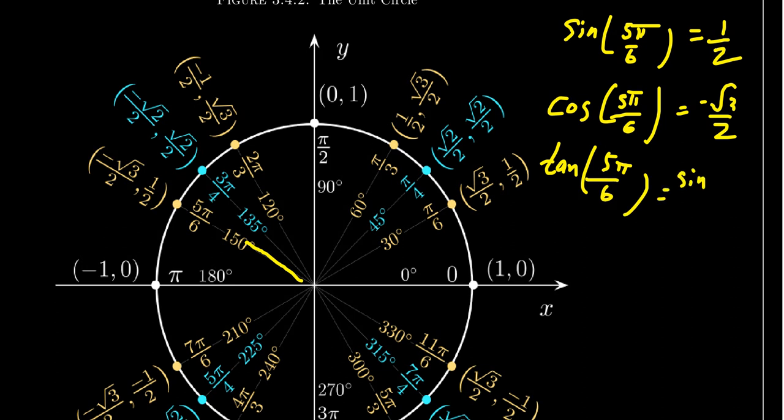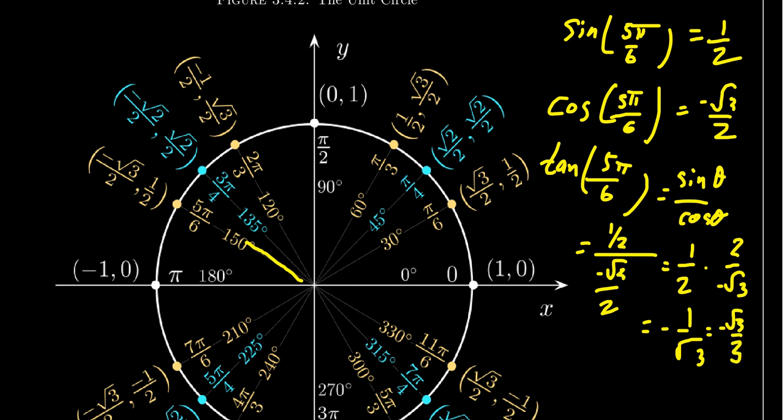How would you do something like tangent, tangent of 5 pi over 6? Well, tangent recall is going to be sine of theta over cosine of theta, where theta here is 5 pi over 6. And so you're going to take the ratio one half over negative root 3 over 2. It's a fraction divided by a fraction, so you can multiply by the reciprocal. So you're going to get 2 over negative square root of 3, and so you end up with negative 1 over the square root of 3. You can rationalize that if you so want to, to be negative root 3 over 3, and that would then be how you compute tangent.